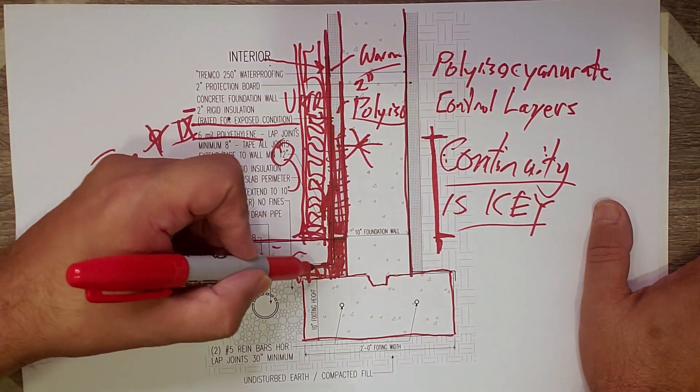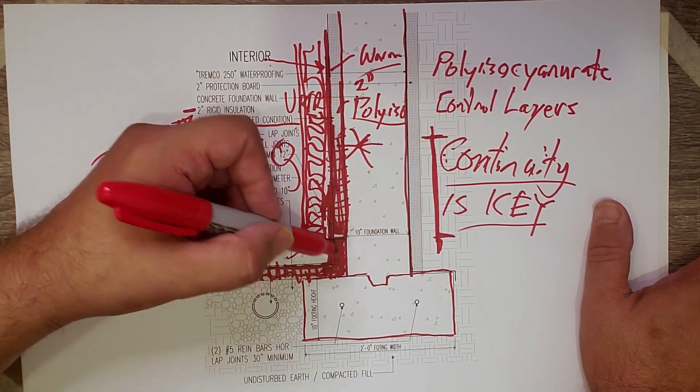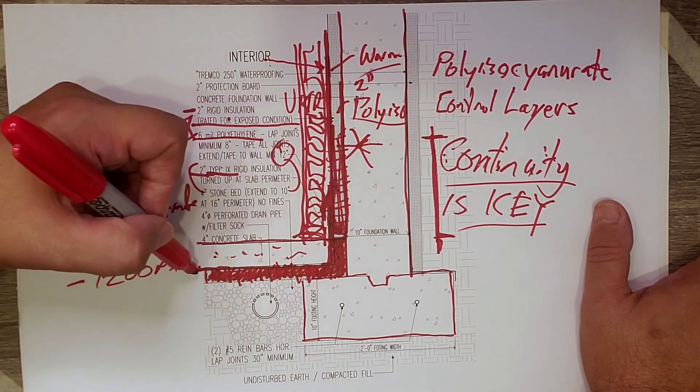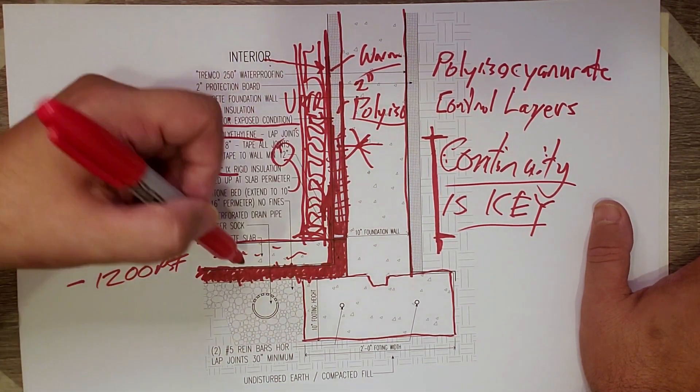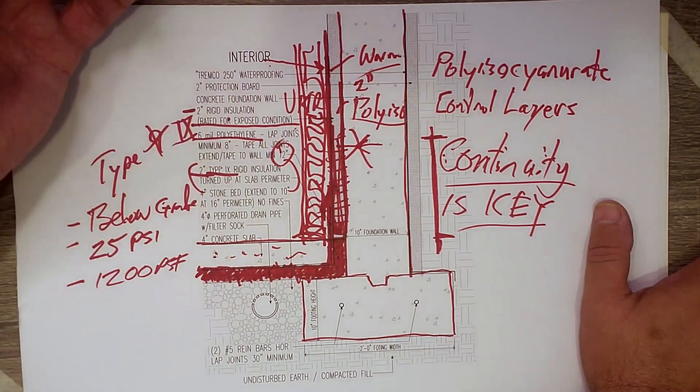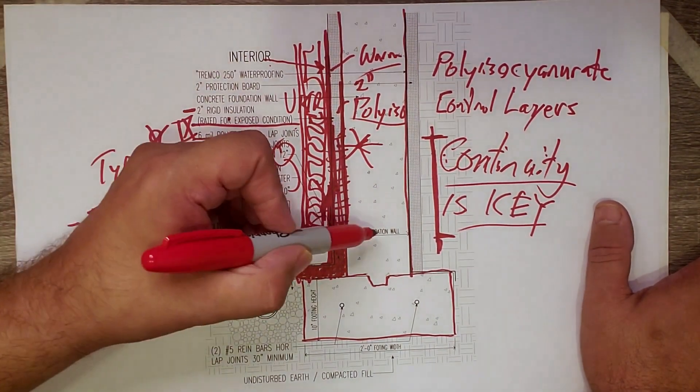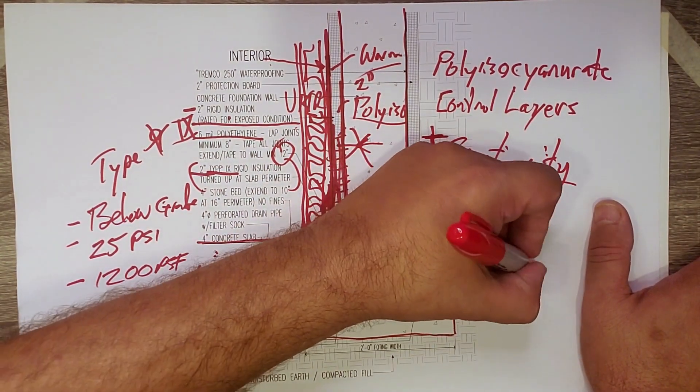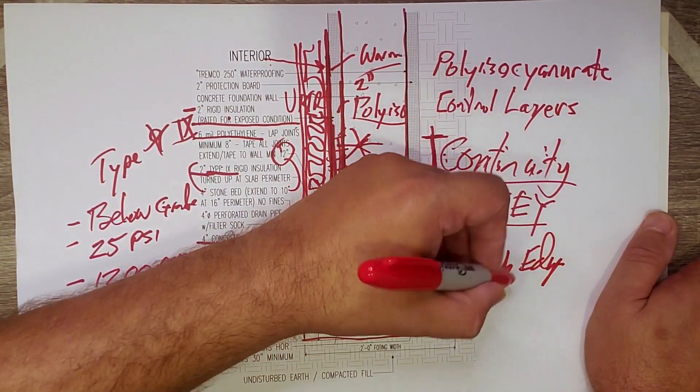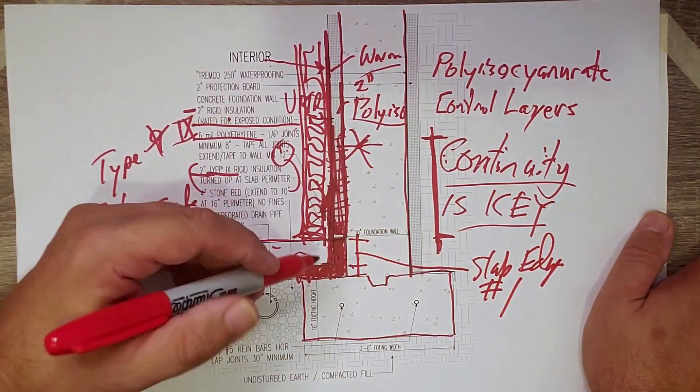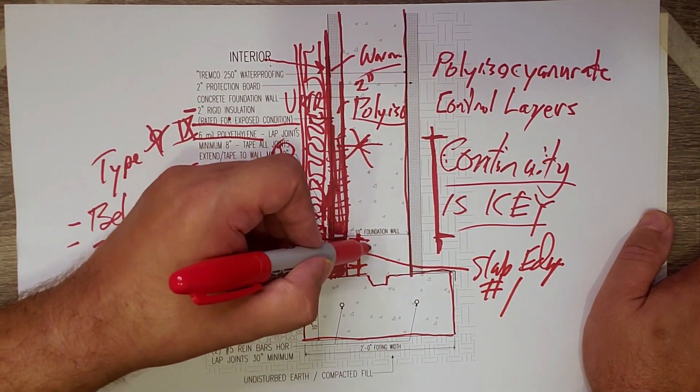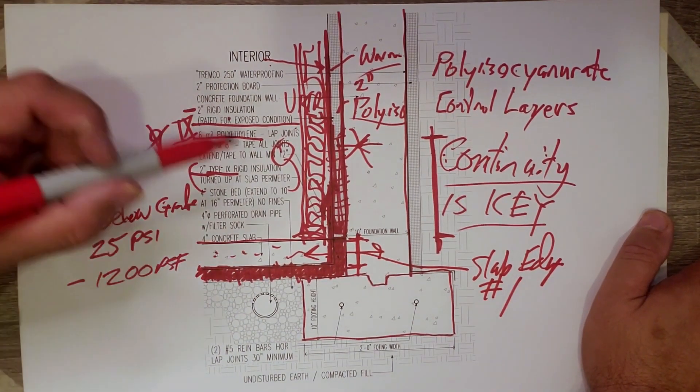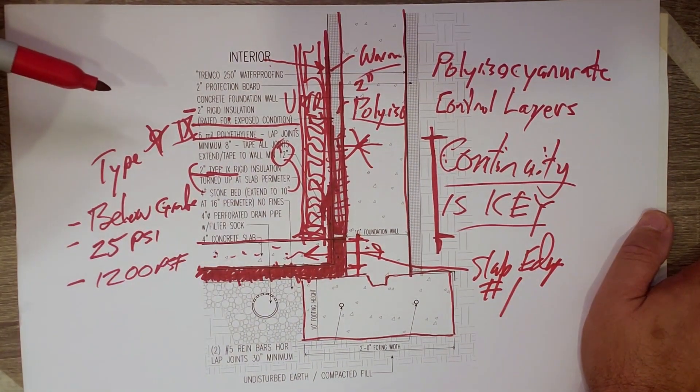But remember continuity is key. You saw it out there turning that corner. People often always ask what's the most important part of under slab insulation? Well, I break it down into three pieces. One, slab edge. Slab edge is number one, got to have it. That's the most important part. We don't want a thermal break across that surface. We don't want the slab touching the wall.